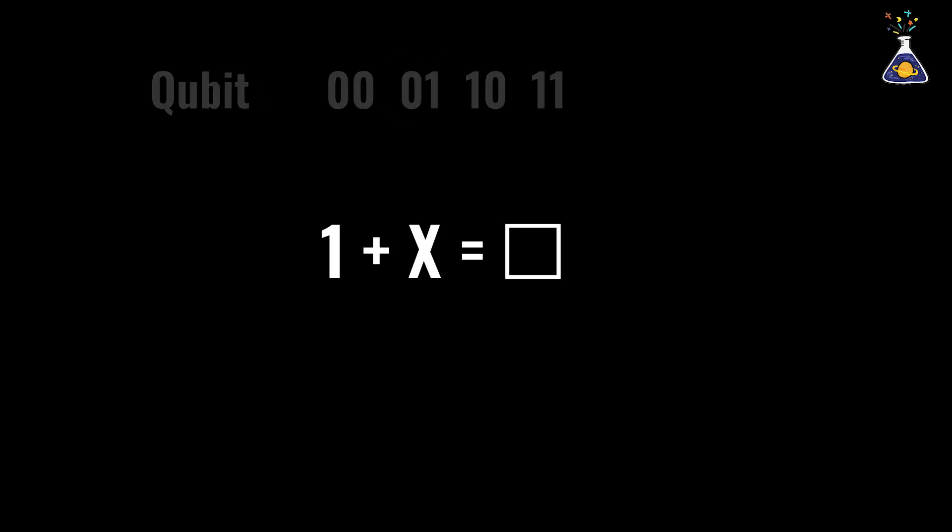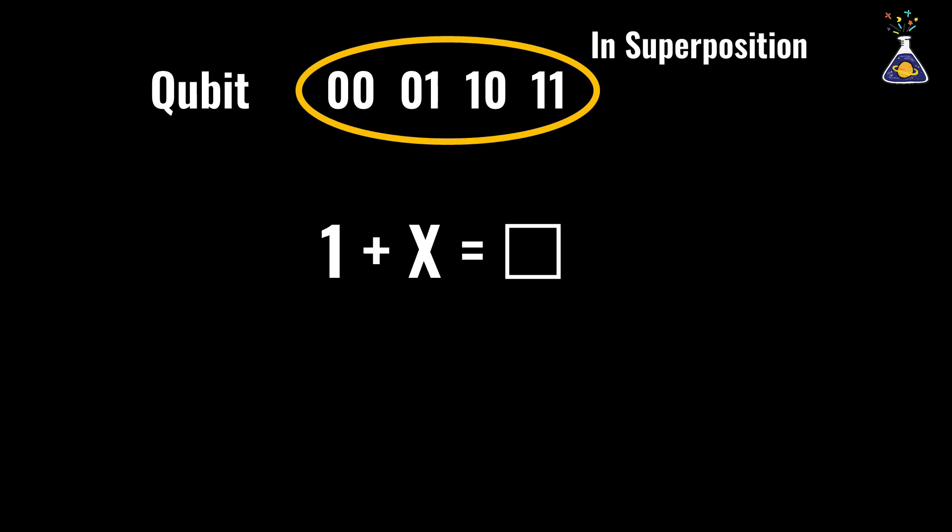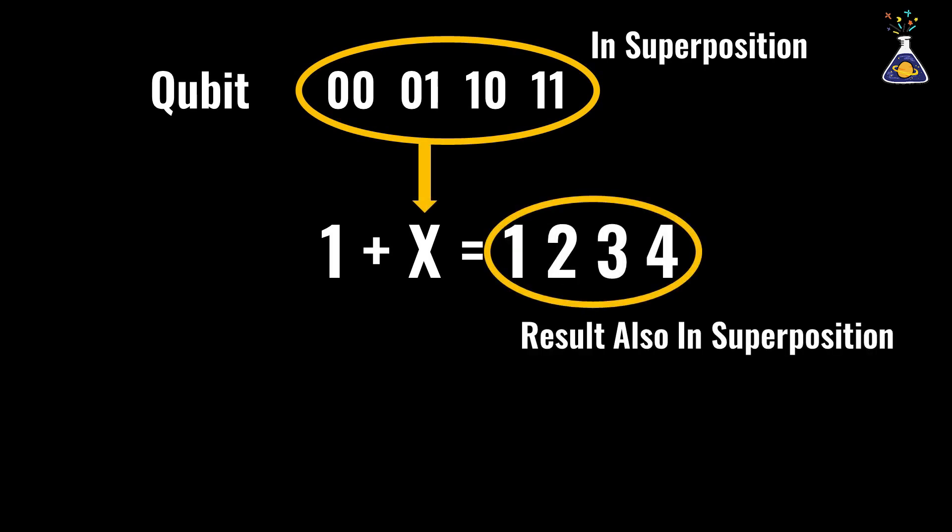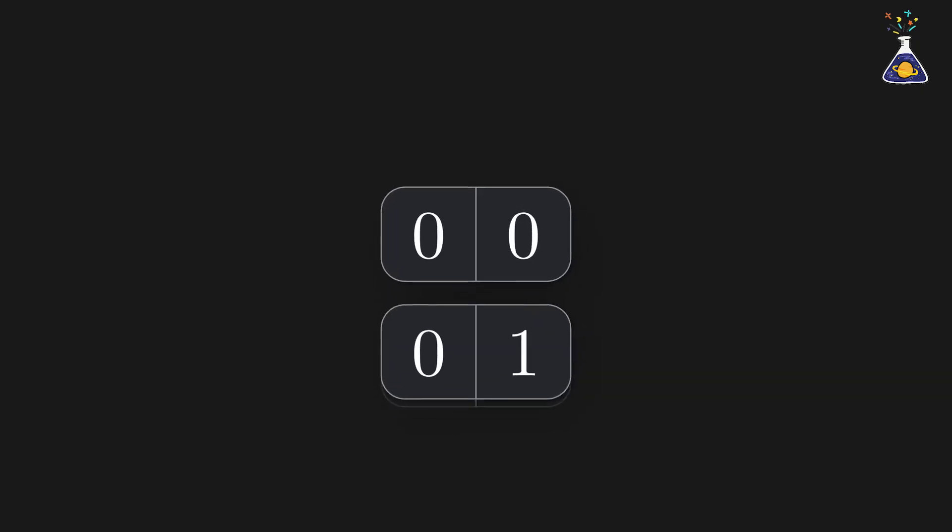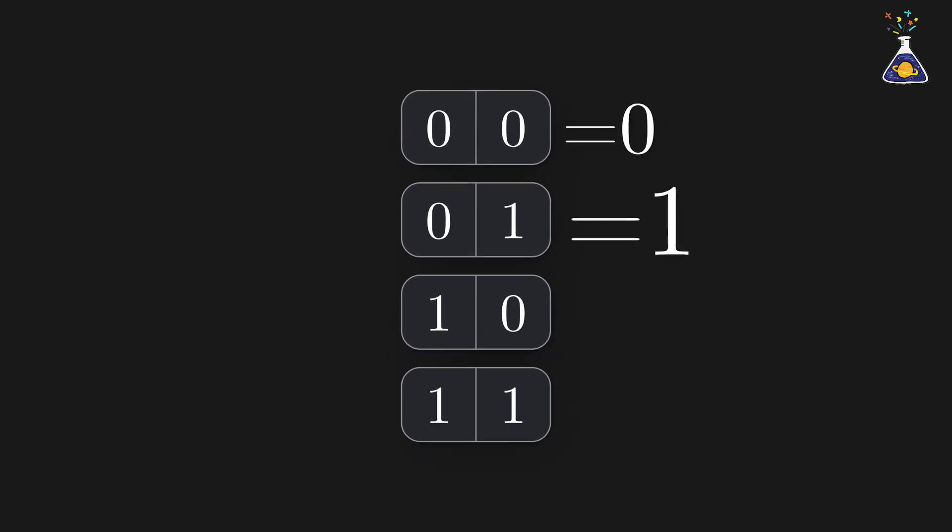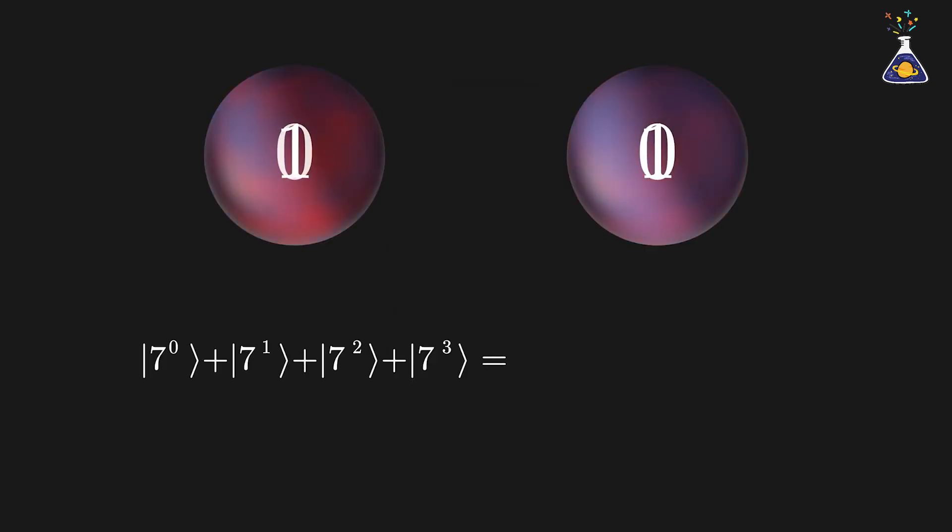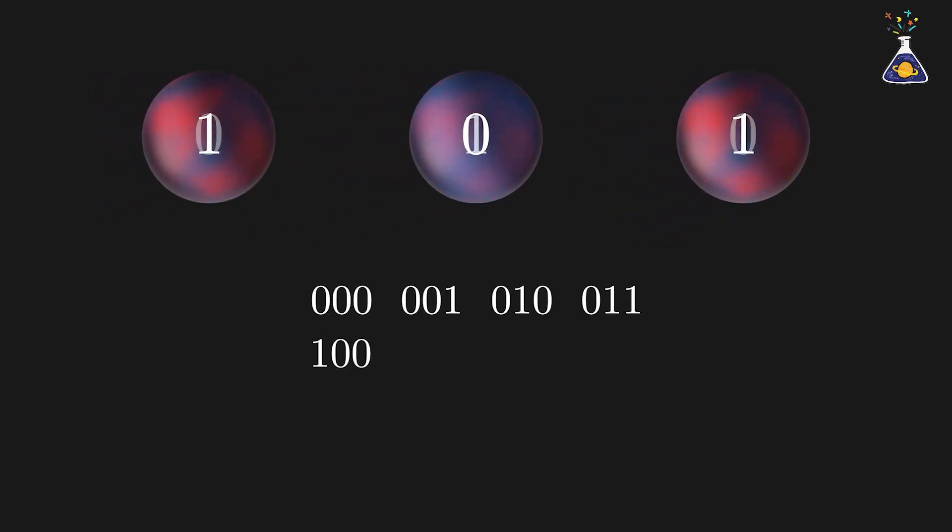However, a quantum computer with two qubits calculates all possibilities simultaneously, all at once. This means that while a traditional computer must perform a calculation in four steps, a quantum computer can complete the same calculation in just one step. As the number of qubits increases, this difference grows exponentially.